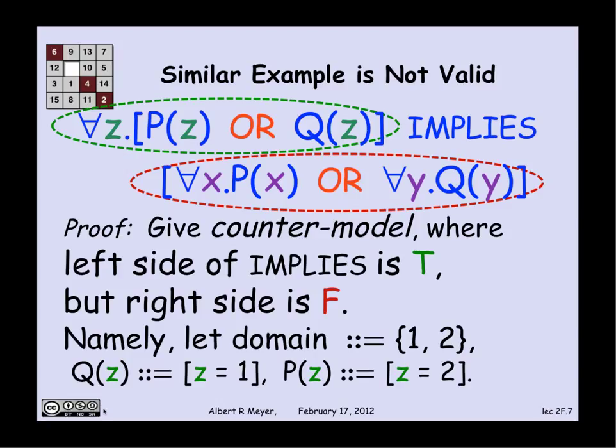is everything in the domain, does it satisfy P? Is everything in the domain equal to two? No, one's not equal to two. What about is everything in the domain equal to one? Is it true that for all Y Q of Y holds? No, two is in the domain, and it's not equal to one. And so we have found exactly what we want in a counter model, which makes the left-hand side of the implies true and the right-hand side of the implies false.